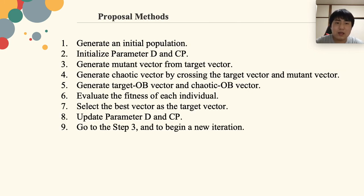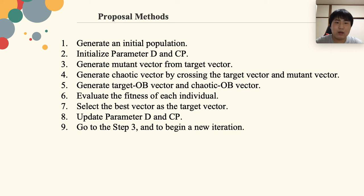These are the main steps of our proposed methods. Firstly, generate an initial population, then initialize parameters d and cp. Afterwards, generate the chaotic vector, chaotic OB vector, and the target OB vector. Then evaluate the fitness and select the best vectors as the target vectors of the next generation, and begin a new iteration.